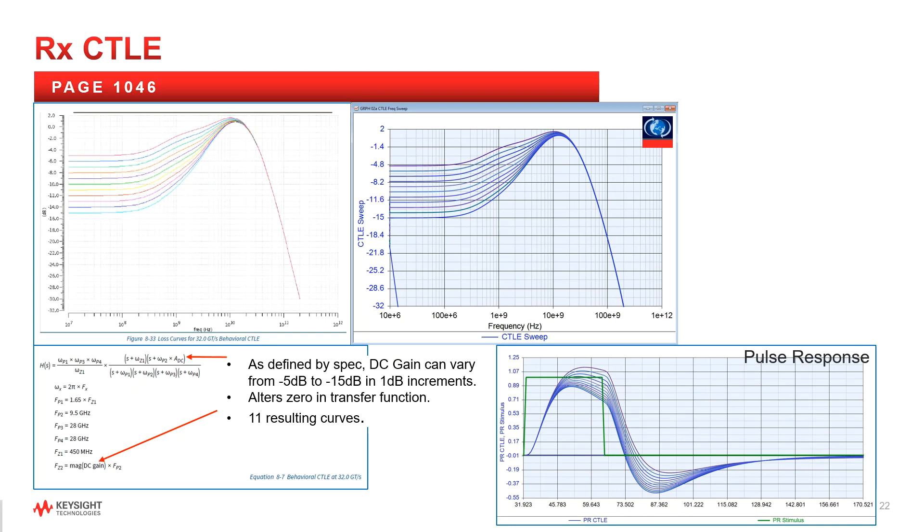Receiver CTLE. In the specification, it's captured as a frequency domain transfer function. Two zeros and four poles are defined. The DC gain controls the placement of the second zero. The plot on the left is from the PCI Express specification, and on the right is using the transfer function from the spec plotting the frequency response in system view. As you can see, they match perfectly. The final graph is the pulse response behavior of the different CTLE settings.